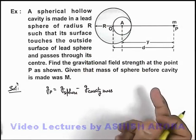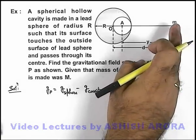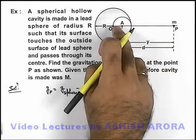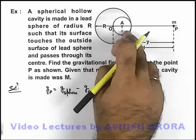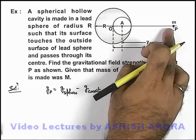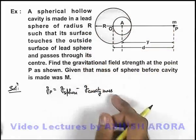We can directly state whatever gravitational field was there at point P due to the mass within this cavity, that will now be subtracted from the whole gravitational field due to the sphere.